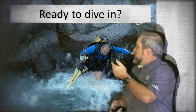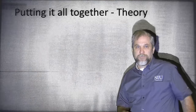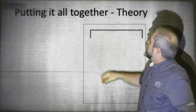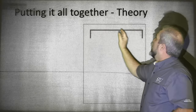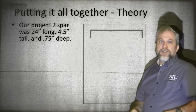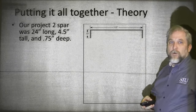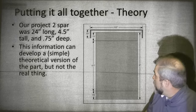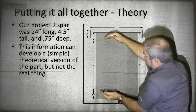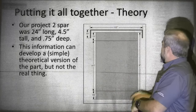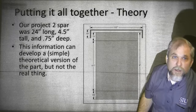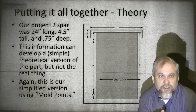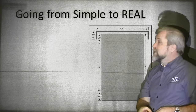So we've covered how to do it all — now let's dive in and put it all together. Here I have the problem I assign my students on project number 2: a 4.5-inch wide spar with 3/4-inch deep flanges. Those are our mold point dimensions — 4.5 by 0.75. That's the theoretical part, but we need to build the real part. Using the theoretical mold points, I could lay out 3/4, 4.5, 3/4, and know that 6 inches would fold this spar. Keep that number in mind. The piece is 24 inches long.